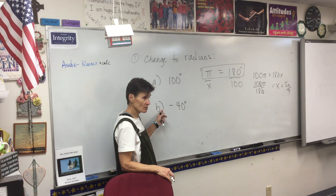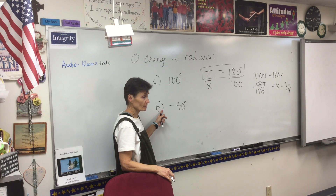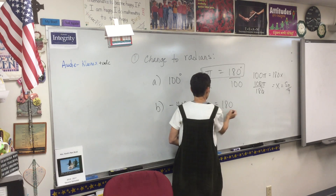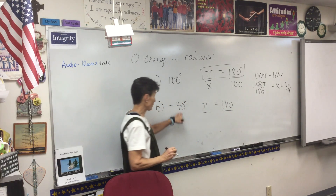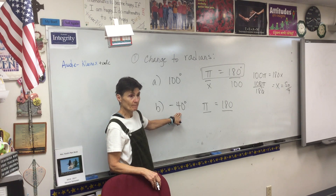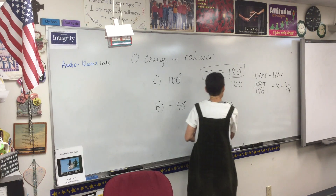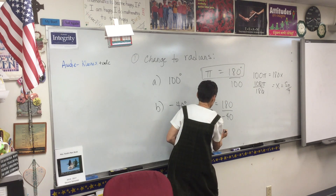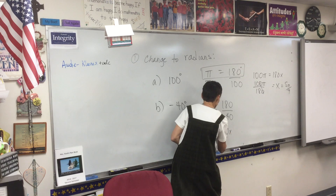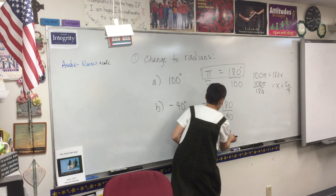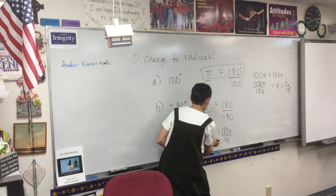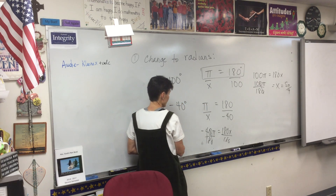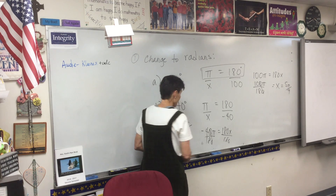Can we do the same thing with this one? Yes. So we'll say π equals 180 — that's what we start with. Then where are you going to put the negative 40? Under the 180. So negative 40π equals 180x.